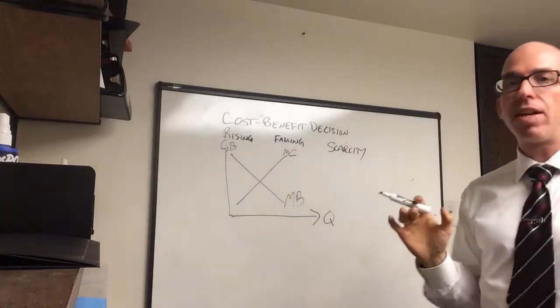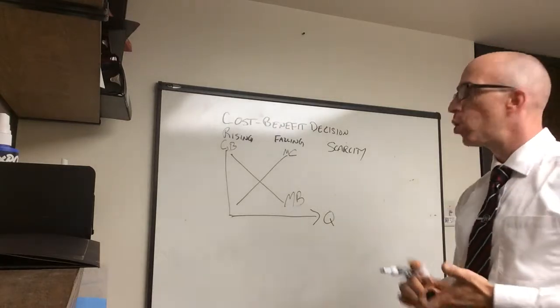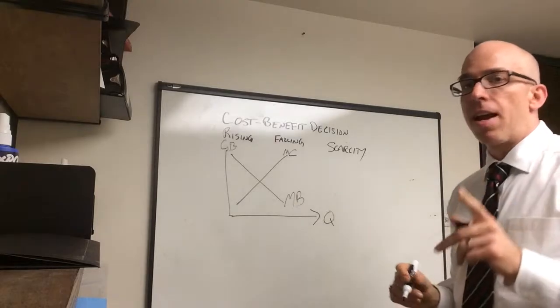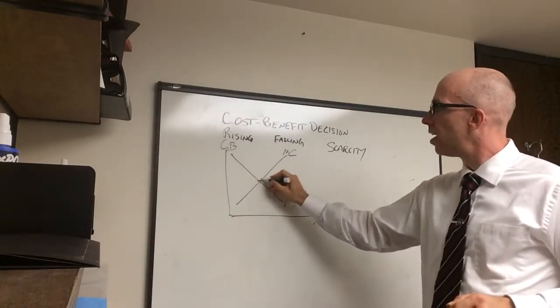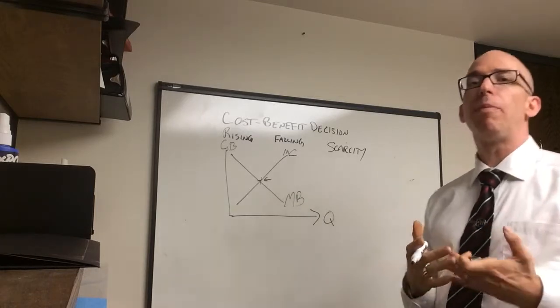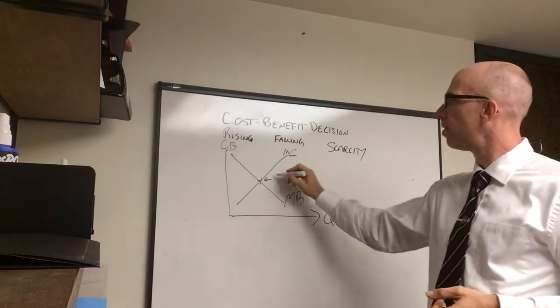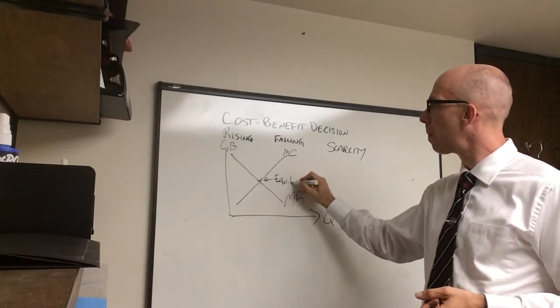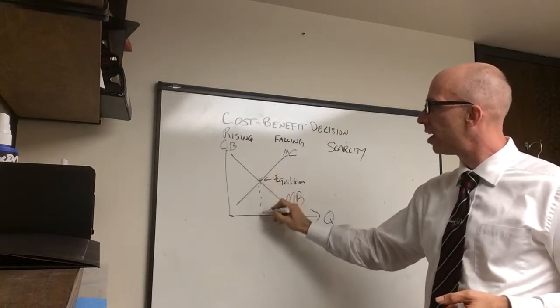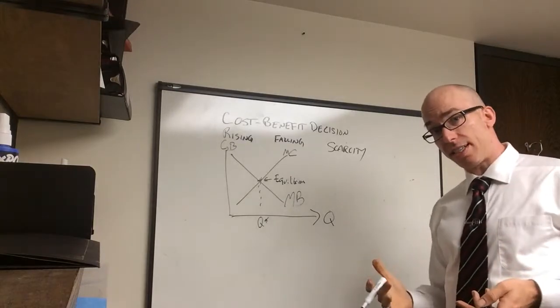And so, we sometimes talk about diminishing returns. The technical phrase is diminishing marginal returns. So, we have increasing marginal costs, decreasing marginal benefits. Now, this is important in economics. This crossing point is the equilibrium point. Equilibrium means balance. Here, costs and benefits are balanced. And right here is the quantity, oftentimes given Q star for equilibrium quantity.